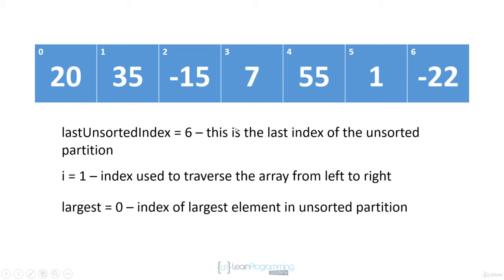We initialize a 'largest' field to zero, so when we start we say 20 is the largest element we know about so far — whatever's at position zero will be the largest element. We're going to start by comparing the element at position one to whatever is at position zero, so we start with i equal to one. These are our initial values: the last unsorted index is six because the entire array is unsorted, i is one, and 'largest' — which contains the index of the largest element in the unsorted partition — is initialized to zero.